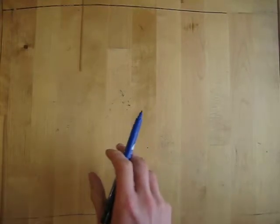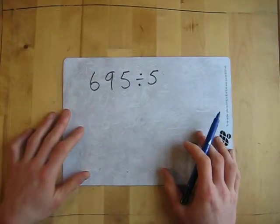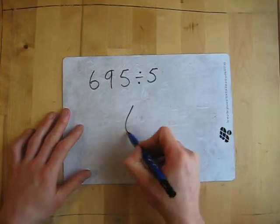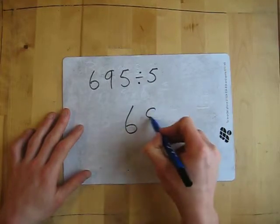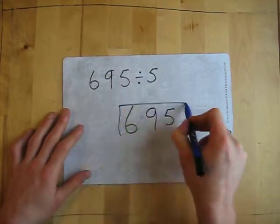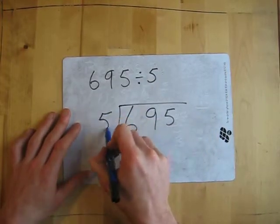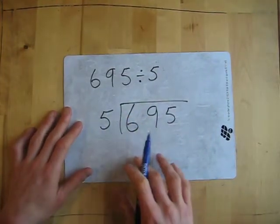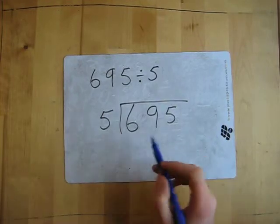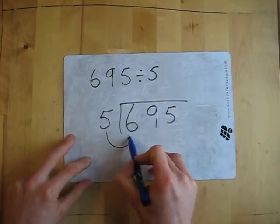So if I've got 695 divided by 5, we do the bus stop method — short division. 695, the first number goes underneath the bus stop, and the 5 goes at the front of the bus stop. He's trying to get into the bus stop, obviously. So first question: 5 — how many times does 5 fit in the 6?